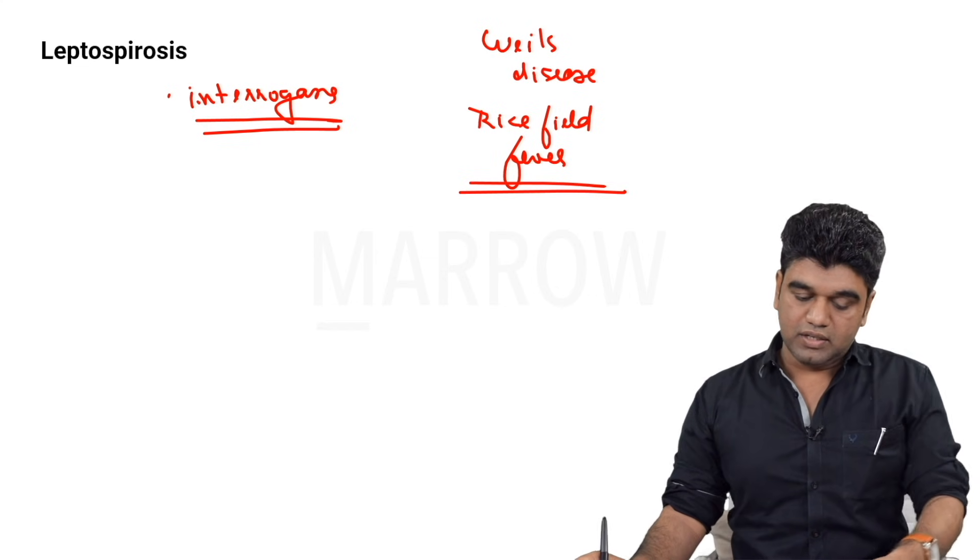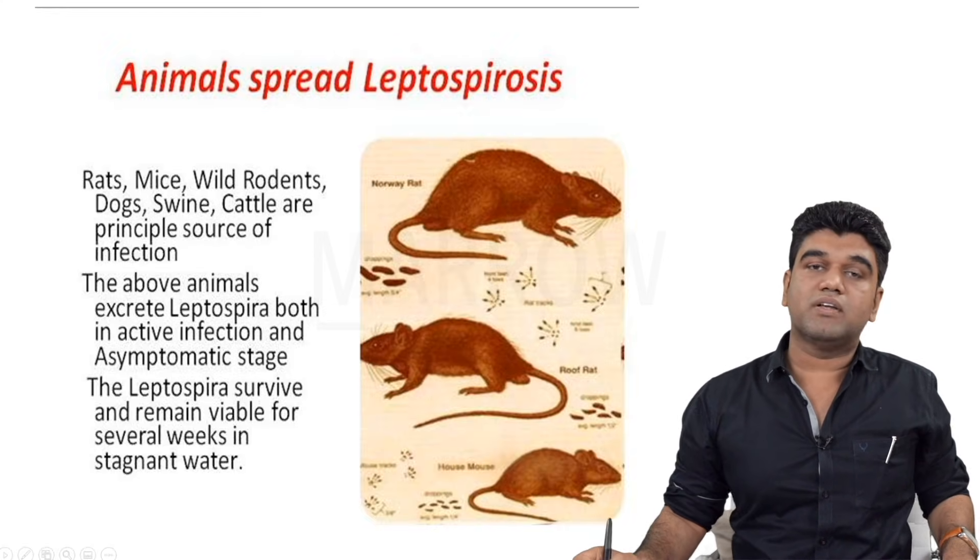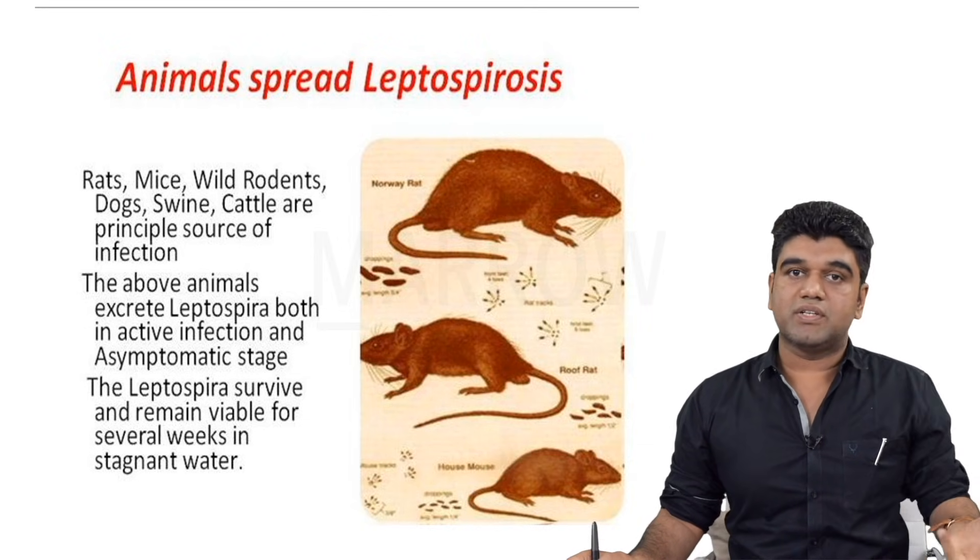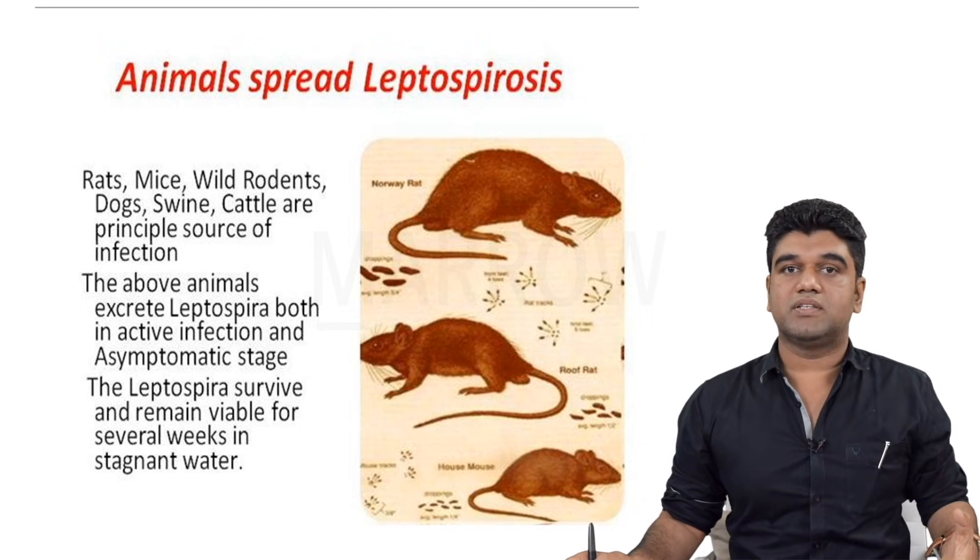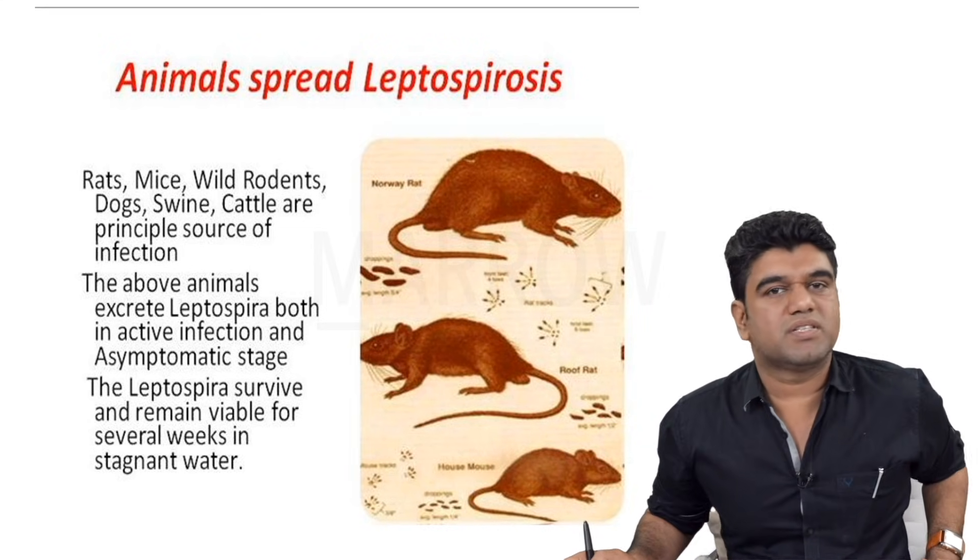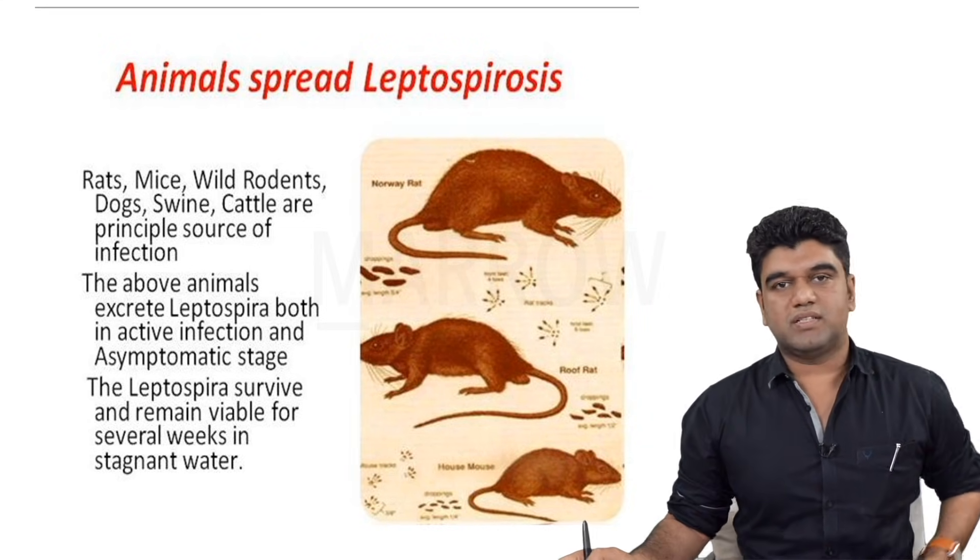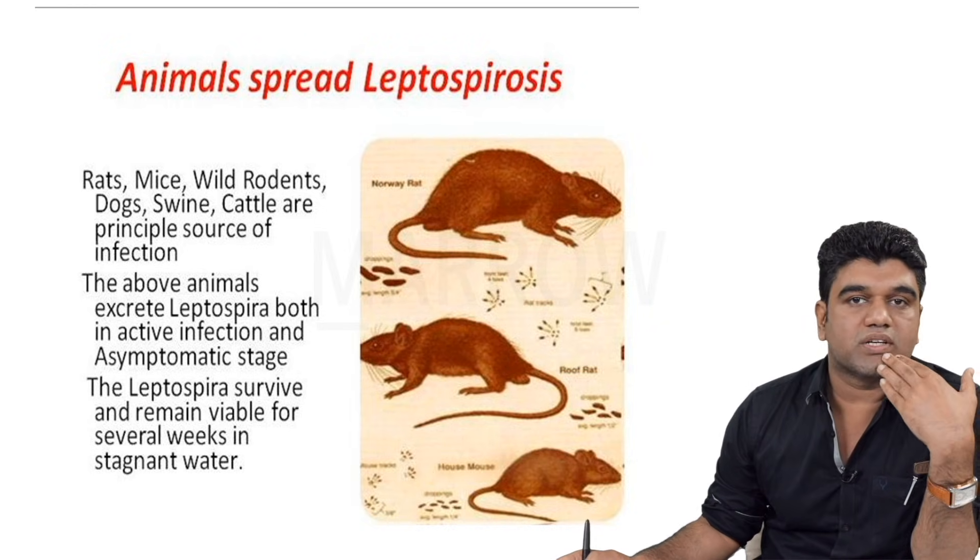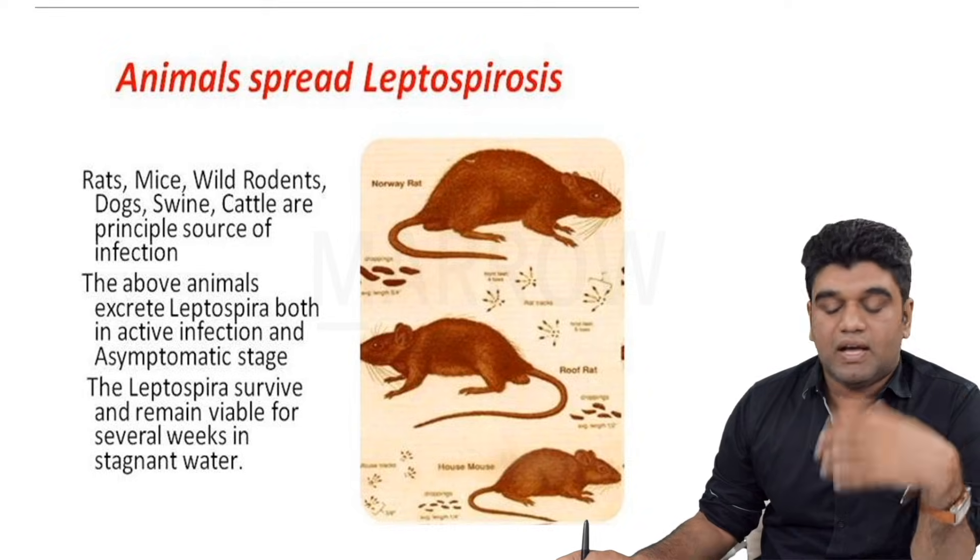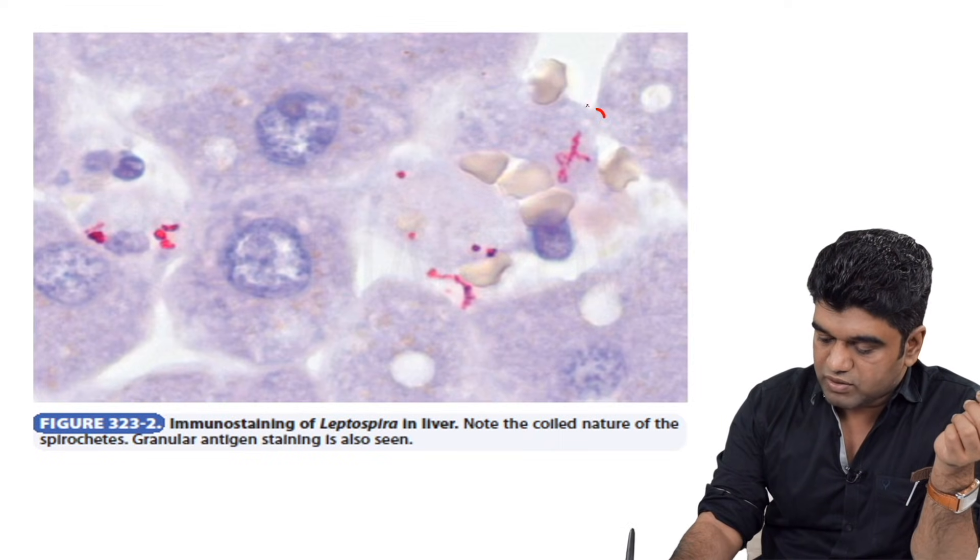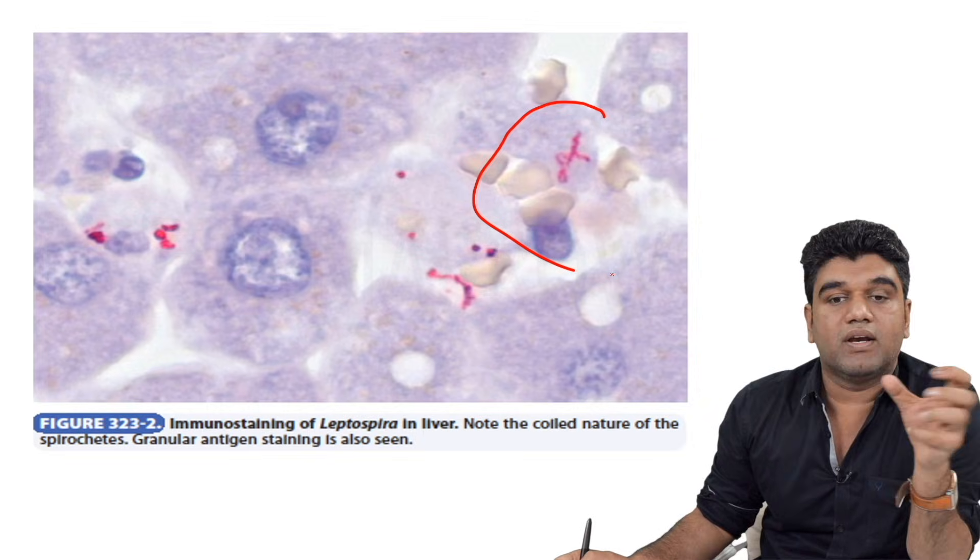The reservoir is your rodent and it's excreting this in its urine as well as stool, primarily in its urine, contaminating the water. Whether you get it with intact skin is a matter of controversy. Most people think you don't get it with intact skin. You need an aberration on your skin or it has to enter through the mucosa. This is the coiled nature of the organism.